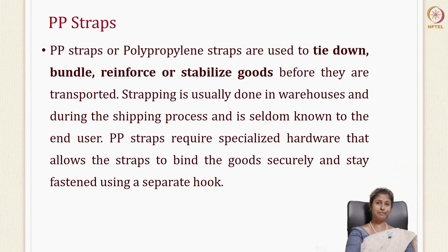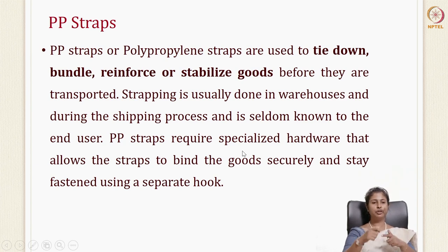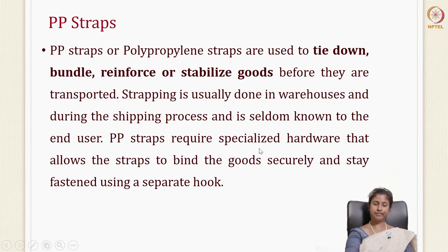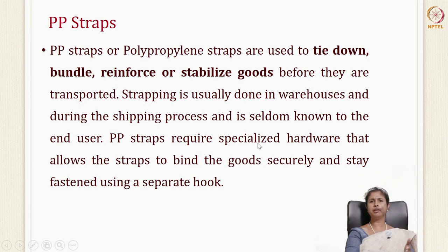The next ancillary packaging material is the PP strap. PP stands for polypropylene. These straps are used to tie and bundle goods. Strapping is usually done in the warehouse during the shipping process and requires specialized hardware to bind goods and keep them securely in place.